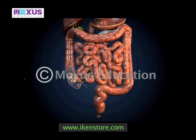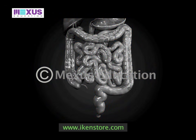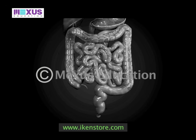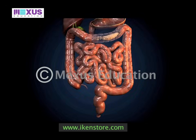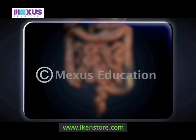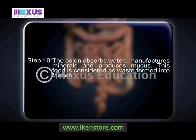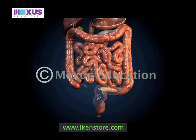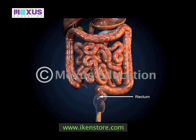The colon absorbs water, manufactures minerals, and produces mucus. The undigested food gradually solidifies as it moves through the colon. This food is considered waste and is formed into fecal matter. The waste moves into the last part of the large intestine known as the rectum, and is ultimately expelled from the anus through the defecation movement.